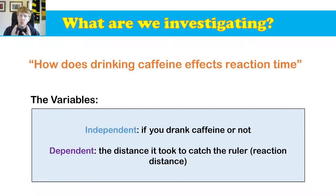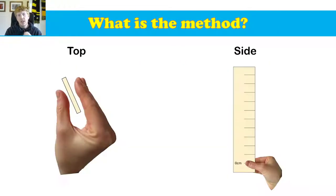Okay, and so what are we investigating? We're investigating how does drinking caffeine affect reaction time? The variables are our independent variable, the one that we change is if you drink caffeine or not. The dependent variable, the one we measure is the distance it took you to catch the ruler. That's what we're measuring in this experiment, or reaction distance as I might refer to it. Brilliant.